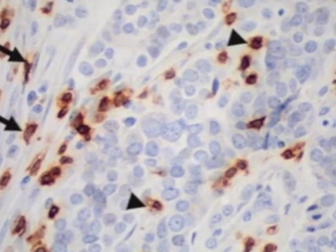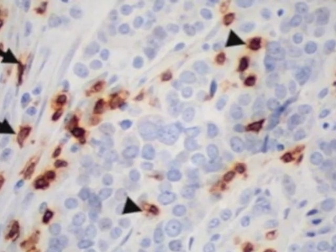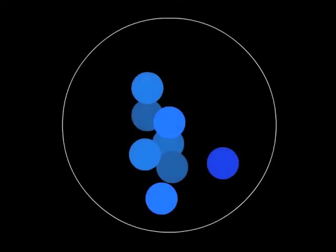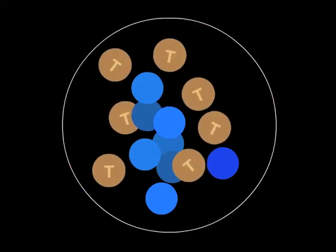This tumor contains both cancer cells, shown in blue, and T-cells, shown in brown. These T-cells are part of the body's immune response to cancer. They recognize the tumor as unwanted material and attempt to eliminate it.